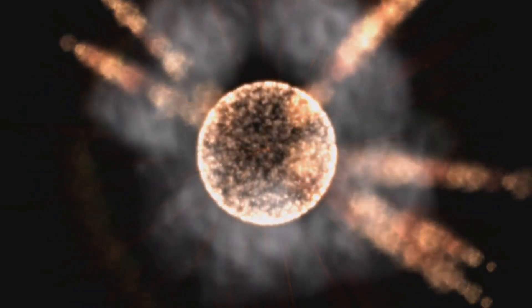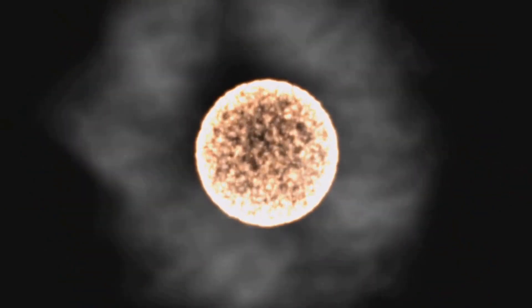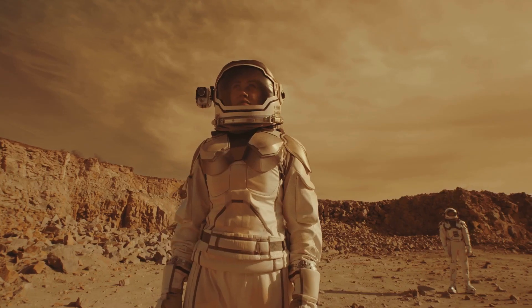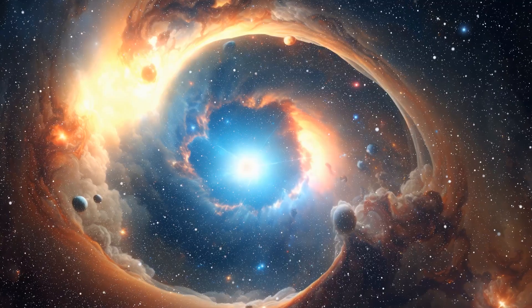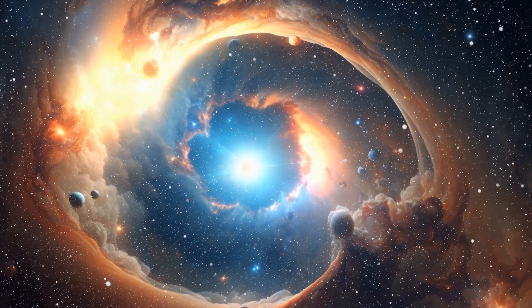It suggests that life didn't spontaneously arise in the primordial soup of our planet alone. Instead, it could have been deliberately seeded across the cosmos by an advanced extraterrestrial civilization. This shatters the traditional view of evolution, introducing a cosmic kind of selection where life is planted, cultivated and harvested across different planets.